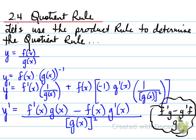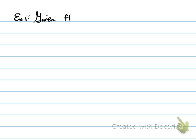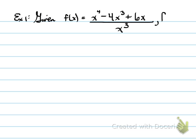Let's use some examples to apply the quotient rule. Example number one: given f(x) equals x to the power of 4 minus 4x cubed plus 6x, all over x cubed, find the first derivative.